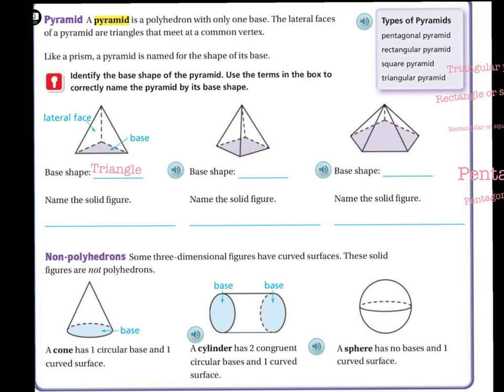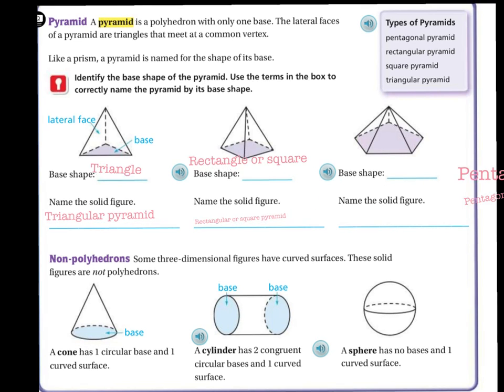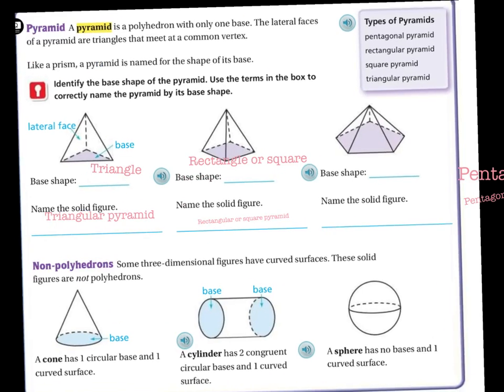So the name of the solid figure is going to be a triangular pyramid. Looking at this next one right here, the base shape is a square or a rectangle. So therefore, the name of the solid figure is a rectangular or a square pyramid.